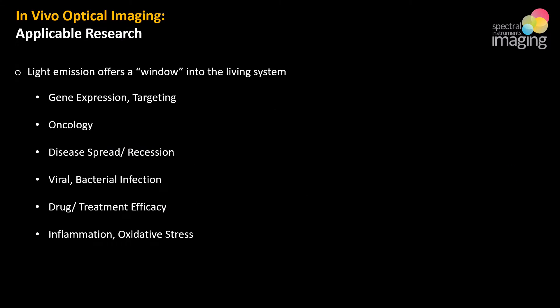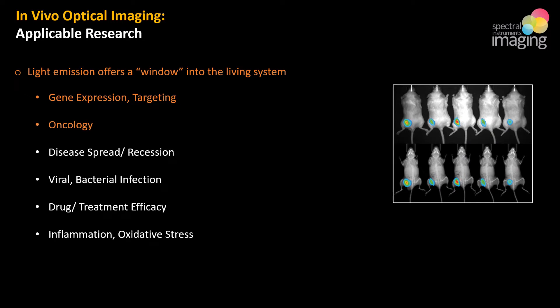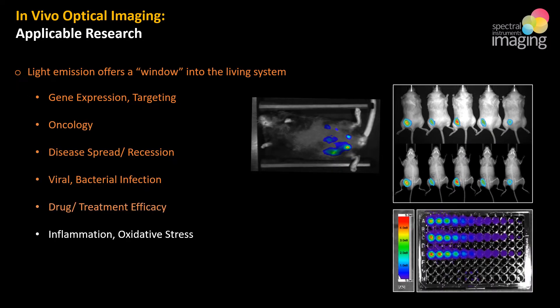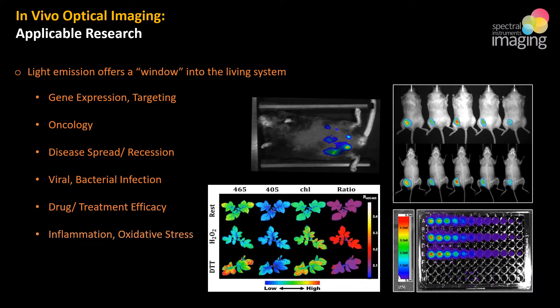This modality applies to a variety of research applications. By capturing and analyzing bioluminescent or fluorescent light emission, in vivo optical imaging systems can help researchers visualize and monitor molecular activity and use the results to track gene expression, the efficacy of genetic modification, cancer growth, the onset or spread of disease, bacterial and viral infection, the effect or lack of effect of a new drug candidate, and even inflammation and oxidative stress.